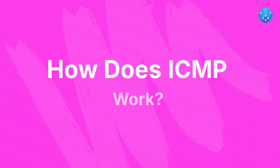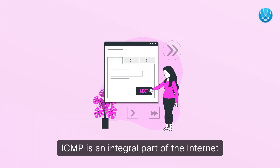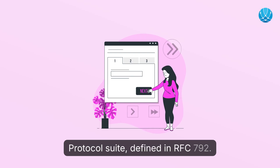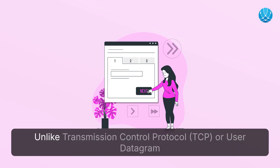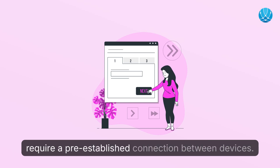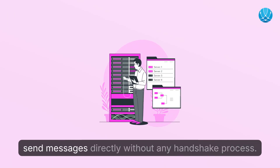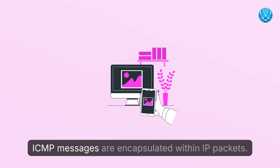How does ICMP work? ICMP is an integral part of the Internet Protocol suite, defined in RFC 792. Unlike Transmission Control Protocol or User Datagram Protocol, ICMP is connectionless, meaning it doesn't require a pre-established connection between devices. This allows for quicker communication as devices can send messages directly without any handshake process.